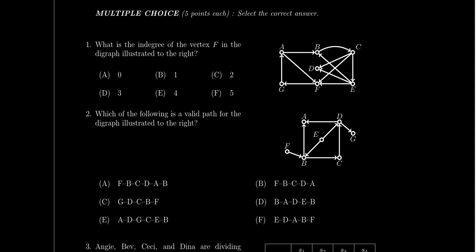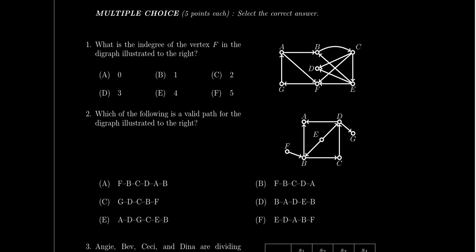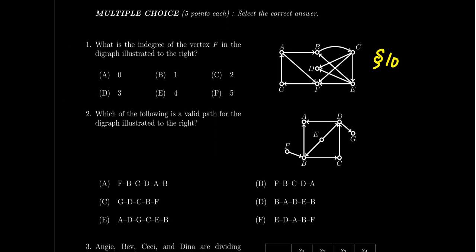Question two is similar — it gives you a digraph and asks which of the following are valid paths. Unlike the graphs from exam one, paths in digraphs are more restrictive because you must go with the flow of the arcs; going against an arc makes a path invalid. So paths and circuits are much more restrictive here. Again, see lesson 10 for this vocabulary.